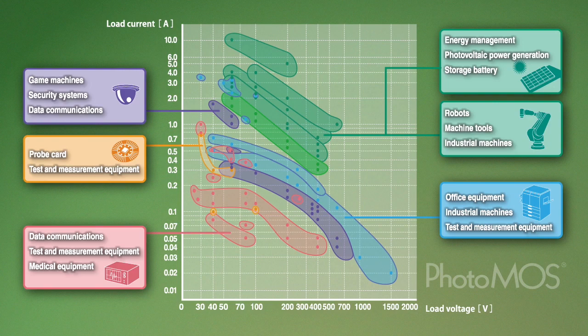Moreover, to meet various application needs, a wide variation of products has been developed. At present, more than 160 different PhotoMOS are available.